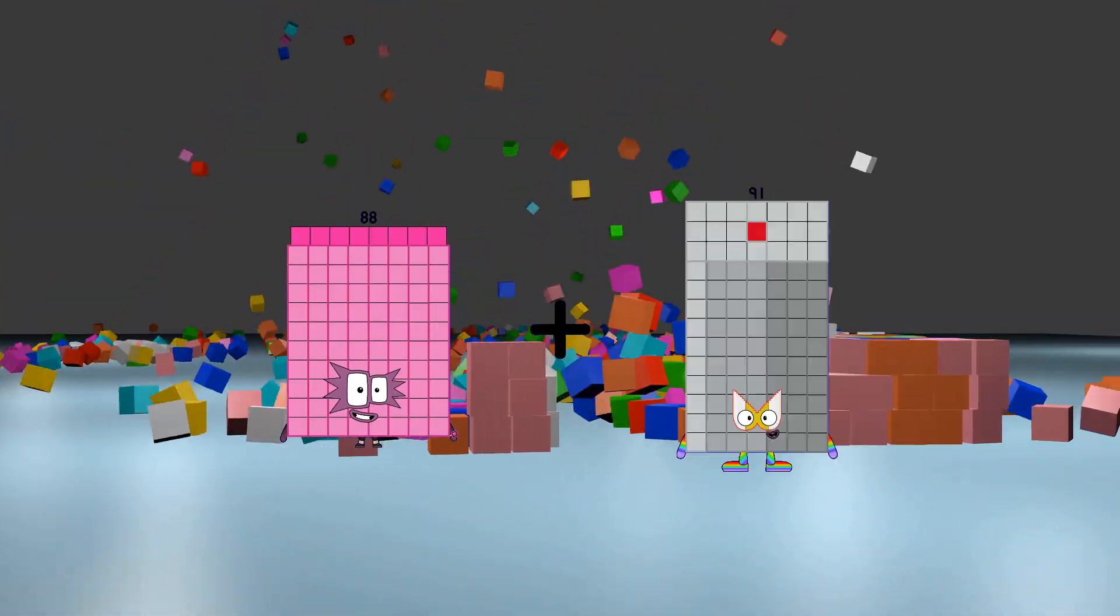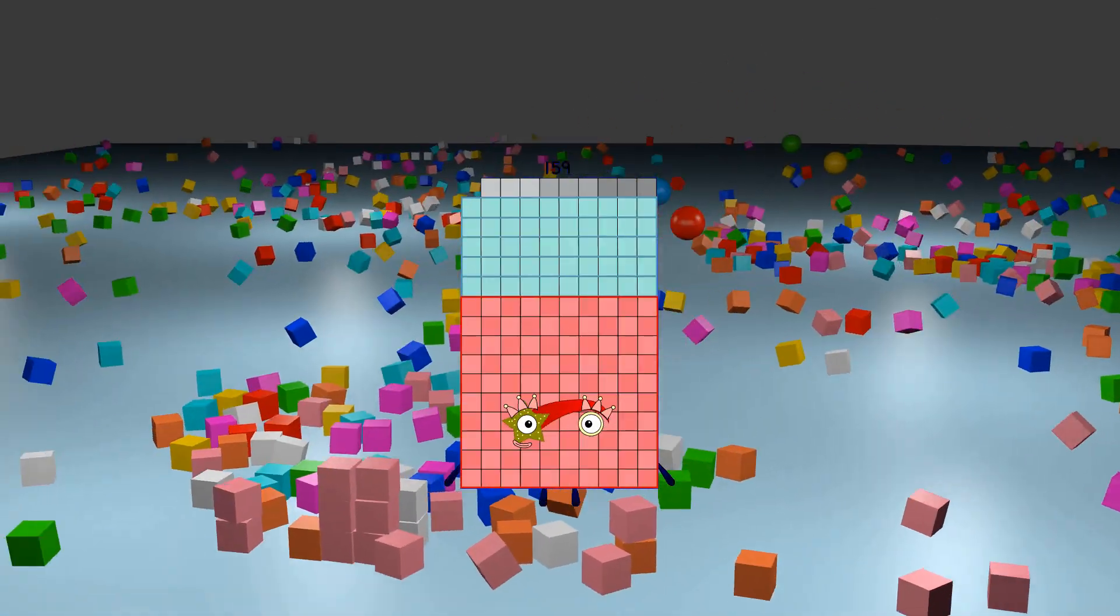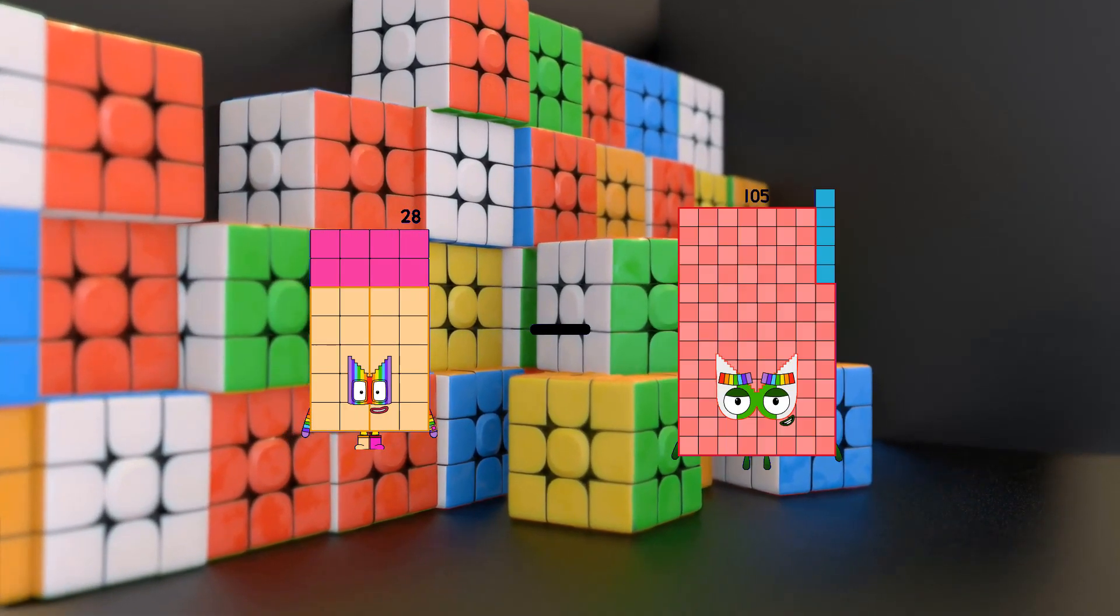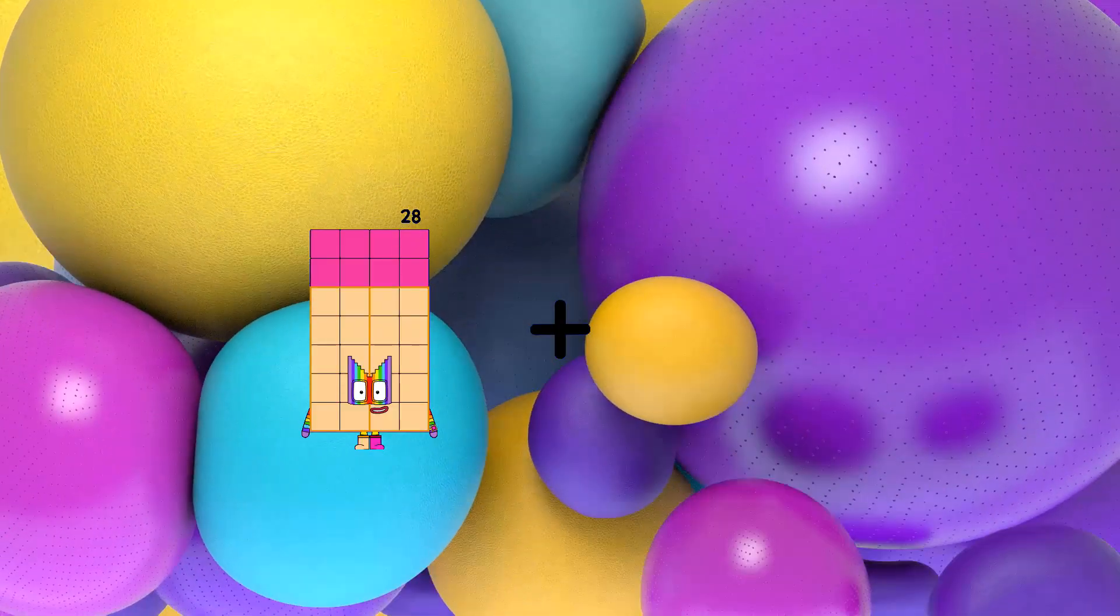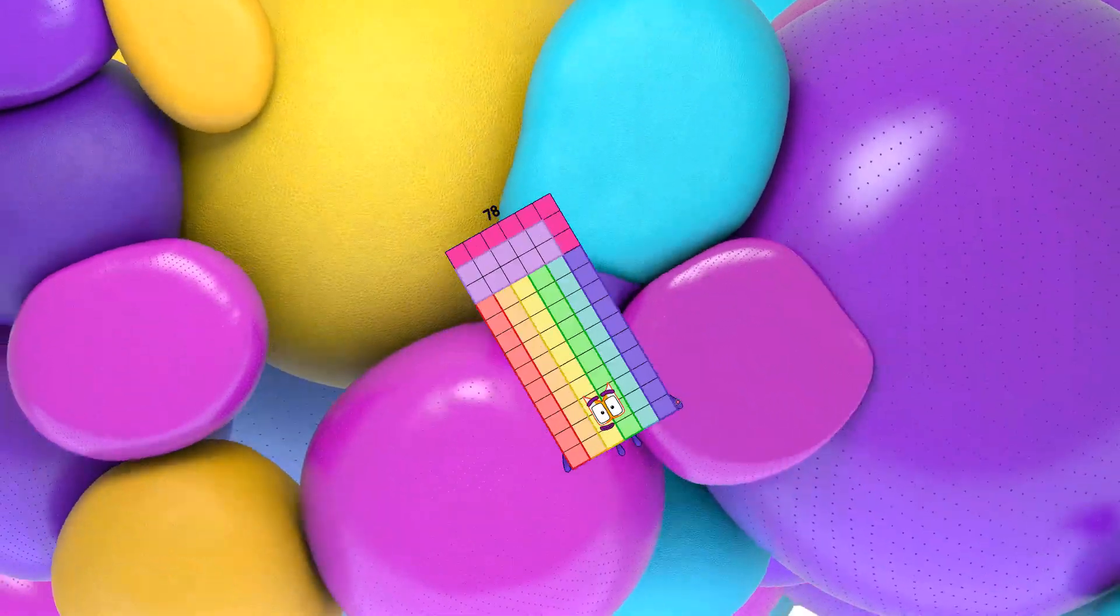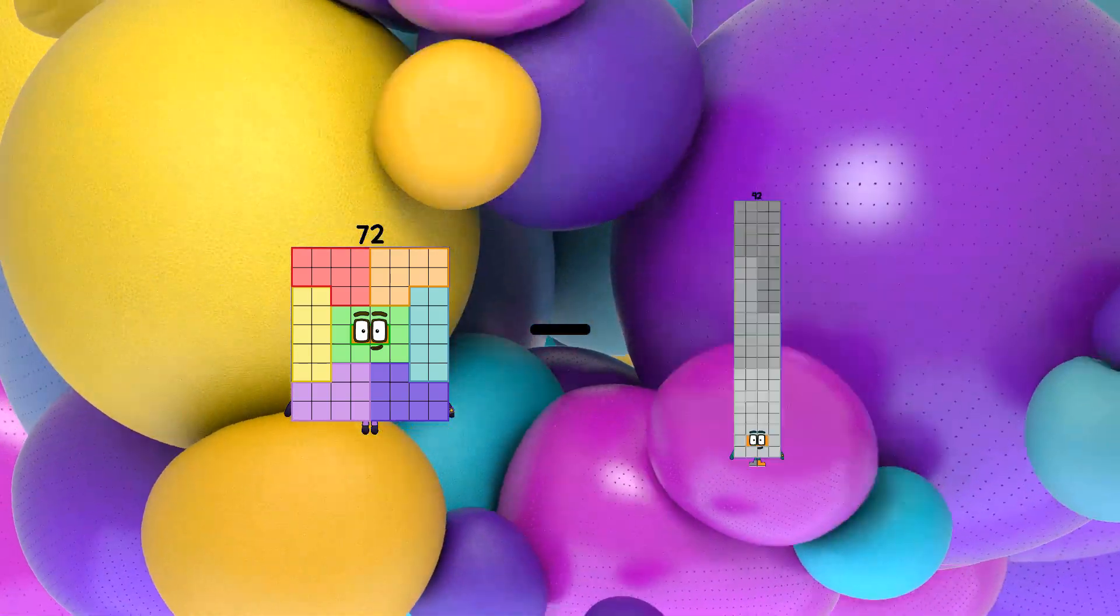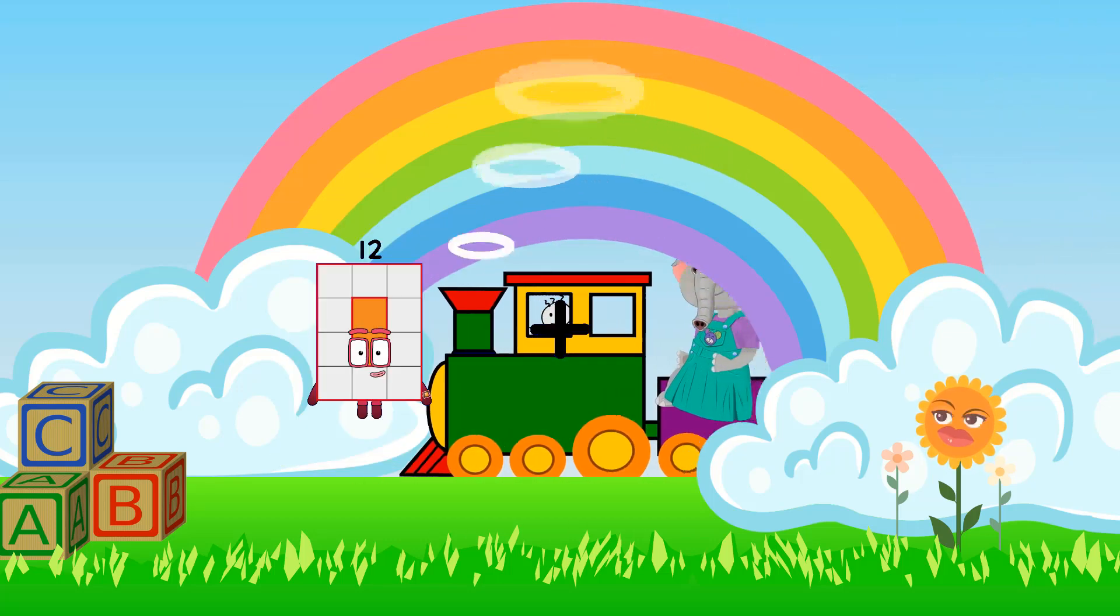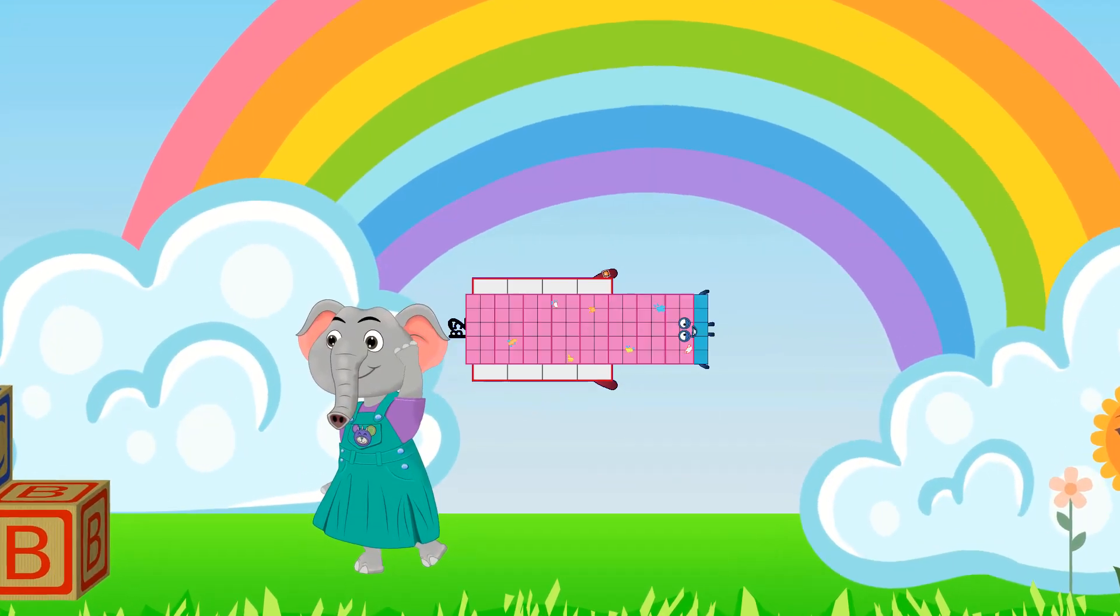88 plus 71 equals 159, 28 minus 12 equals 16, 28 plus 50 equals 78, 72 minus 21 equals 51, 12 plus 85 equals 97.